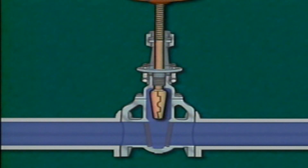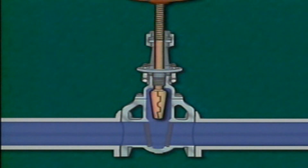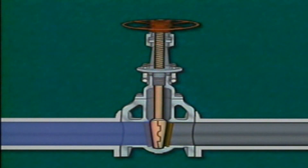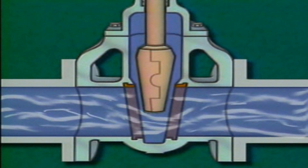Gate valves work best when they operate in either the fully open or the fully closed position. When a gate valve's disc is completely raised, fluid flows straight through the valve with little obstruction. However, if the disc is partially raised, a space opens on either side of the disc and fluid passes under the disc.